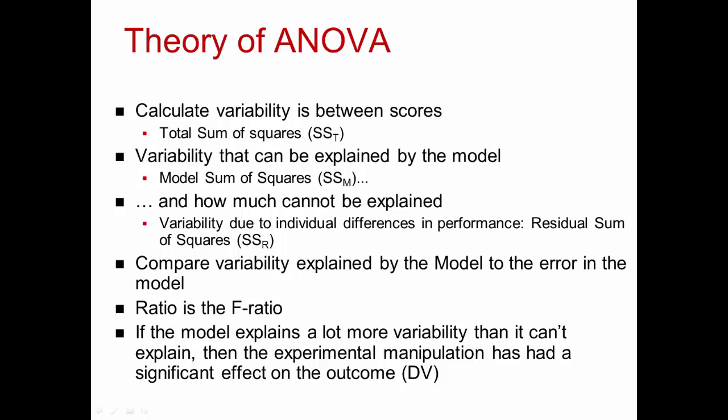We compare the amount of variability explained by the model, or the experiment, to the error in the model — the individual differences. That ratio is called the F-ratio. If the model explains a lot more variability than what it can't explain, then the experimental manipulation has had a significant effect on the outcome, or on the dependent variable. In other videos we've talked about using the F-test, but let's take a closer look at the F-distribution itself.